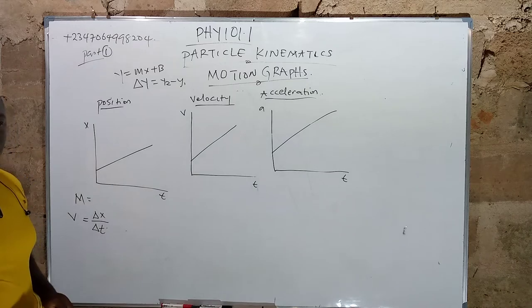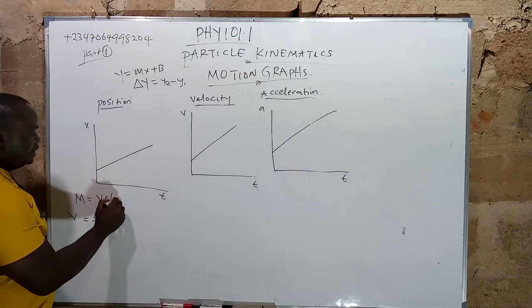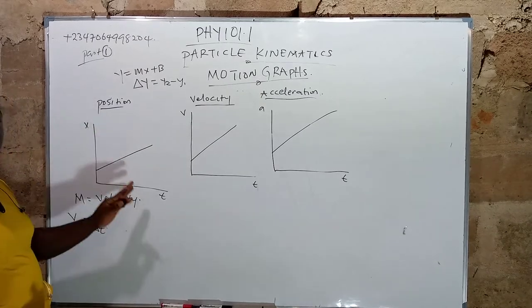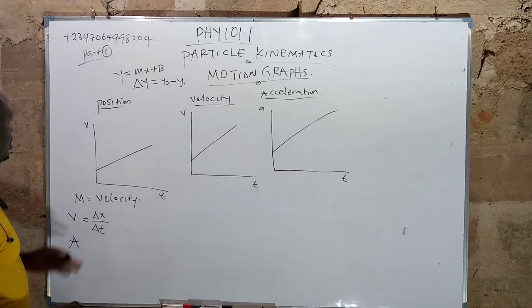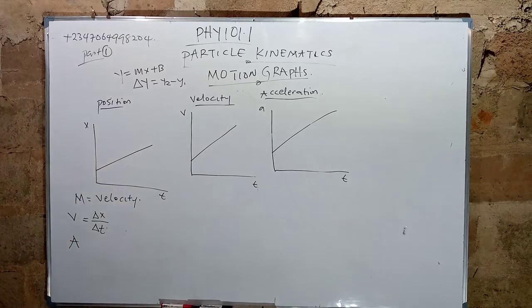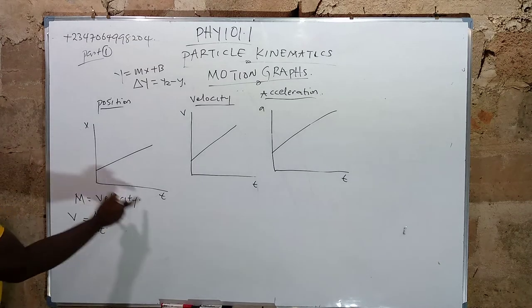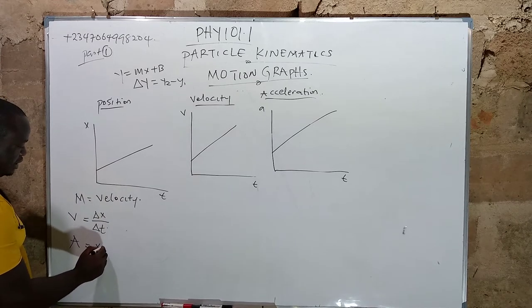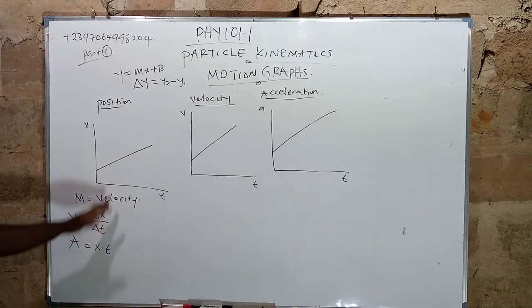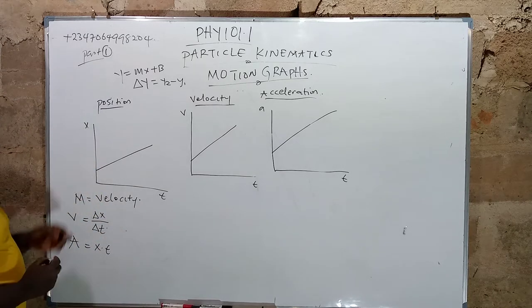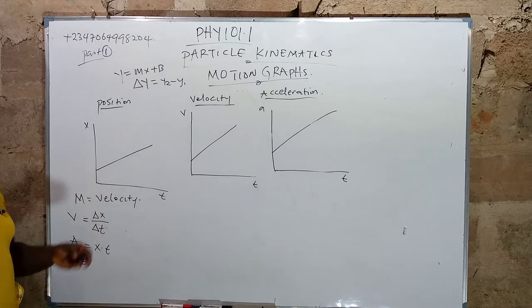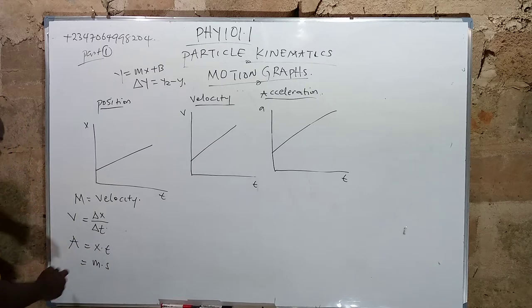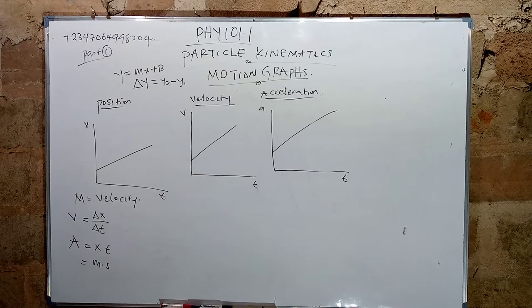Therefore, the slope of a position-time graph is the velocity — that is an examination question. As for the area of a position-time graph, the area involves multiplication, so it is x times t, which gives meters times seconds. This does not correspond to any standard physical quantity, so the area of a position-time graph tells us nothing.